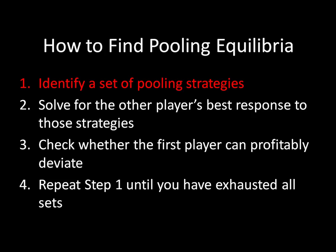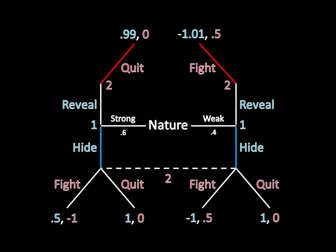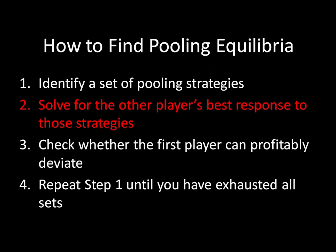We're going to identify a set of pooling strategies. One set of pooling strategies is for both the strong and the weak type to hide. If they're both doing that as a pure strategy, then there's no change in Player 2's belief. She's not getting any extra information out of Player 1 by virtue of the fact that Player 1 has chosen to hide.